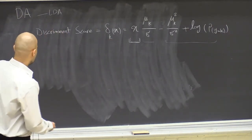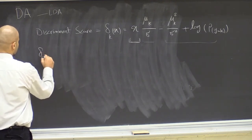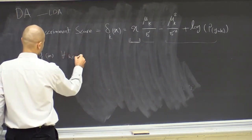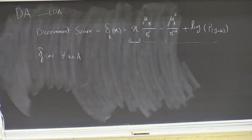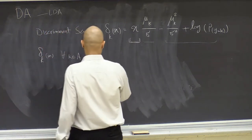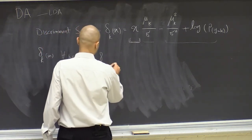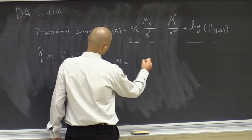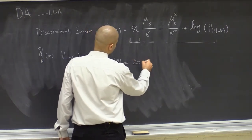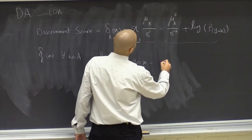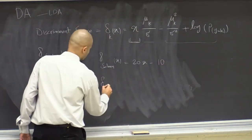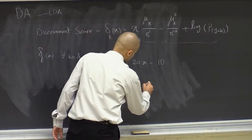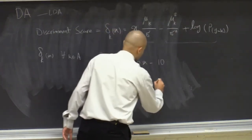If we compute δ_k(x) for all values of k, we can classify using the discriminant score. For example, say δ(salmon) for input x (the length of a fish) is 20x minus 1000, and δ(tuna) for input x is 30x minus 2000.